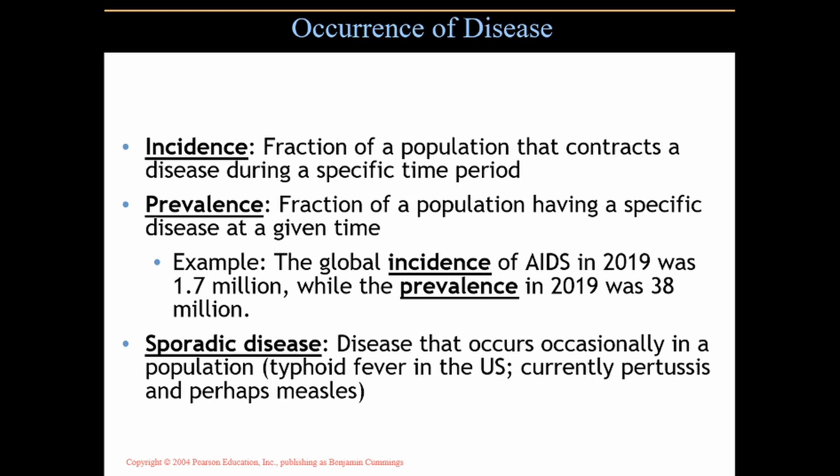We'll look at the terms incidence and prevalence. There's some confusion about those, but it's pretty easy to see the difference. Incidence is the fraction of a population that contracts a disease during a specific time period — whether that's a week, a day, a month, or whatever. Prevalence is the fraction of a population having a specific disease at a given time — how many people actually have it at that particular time.